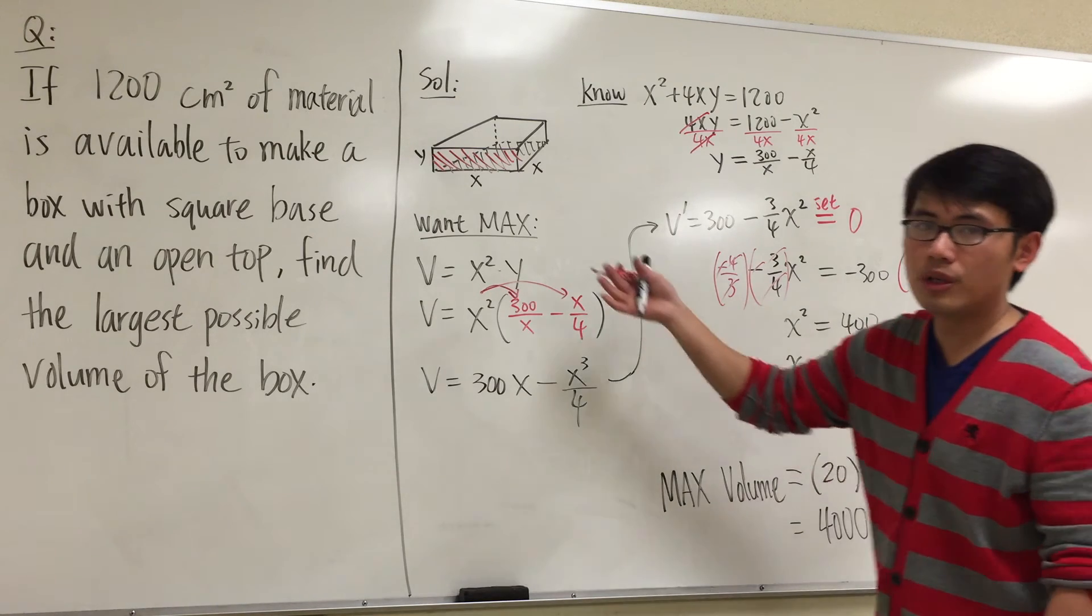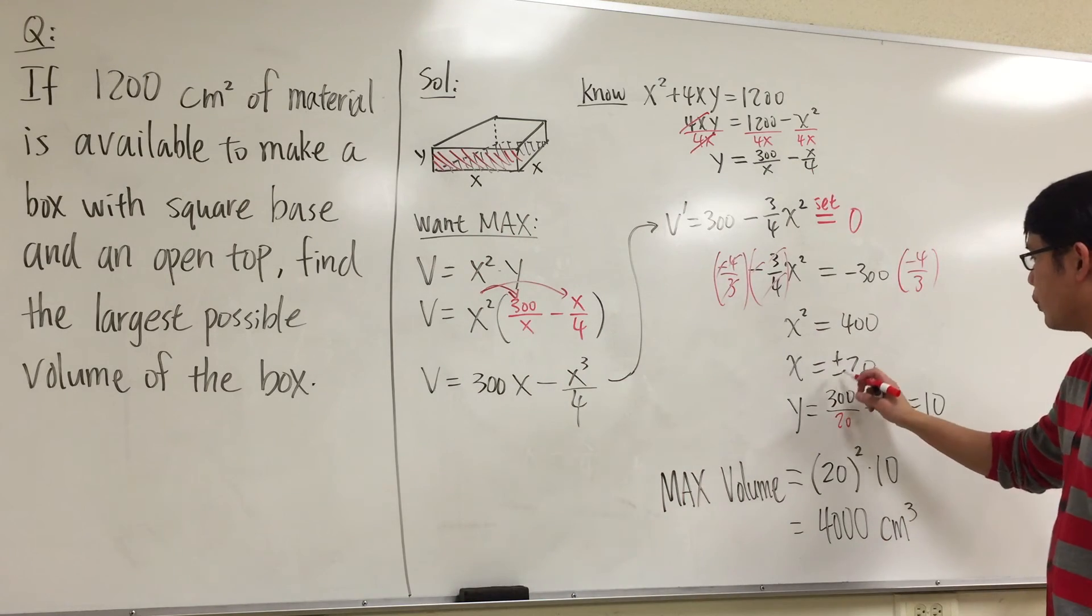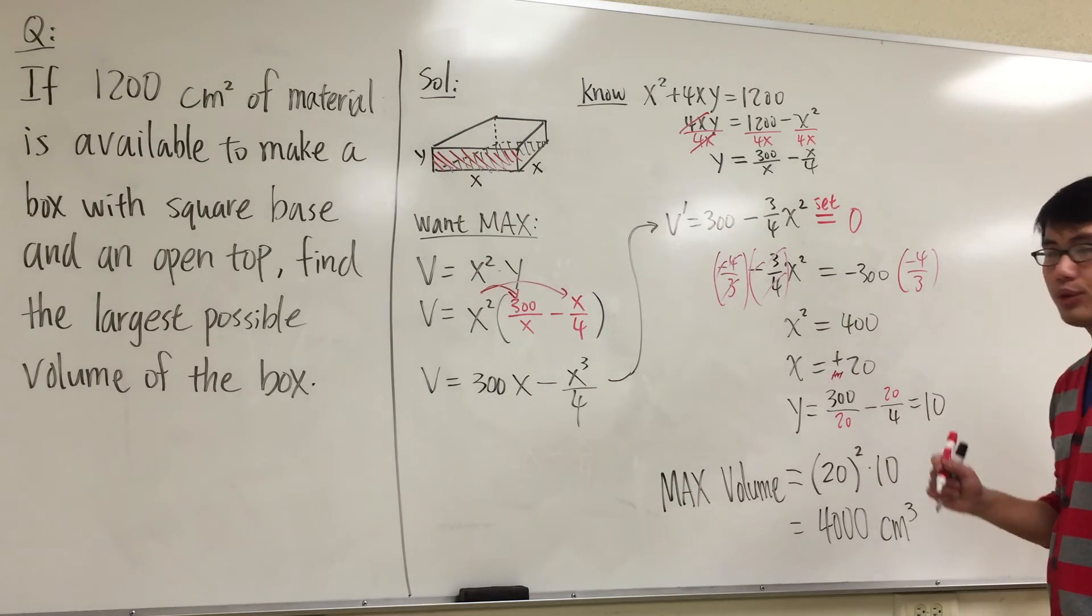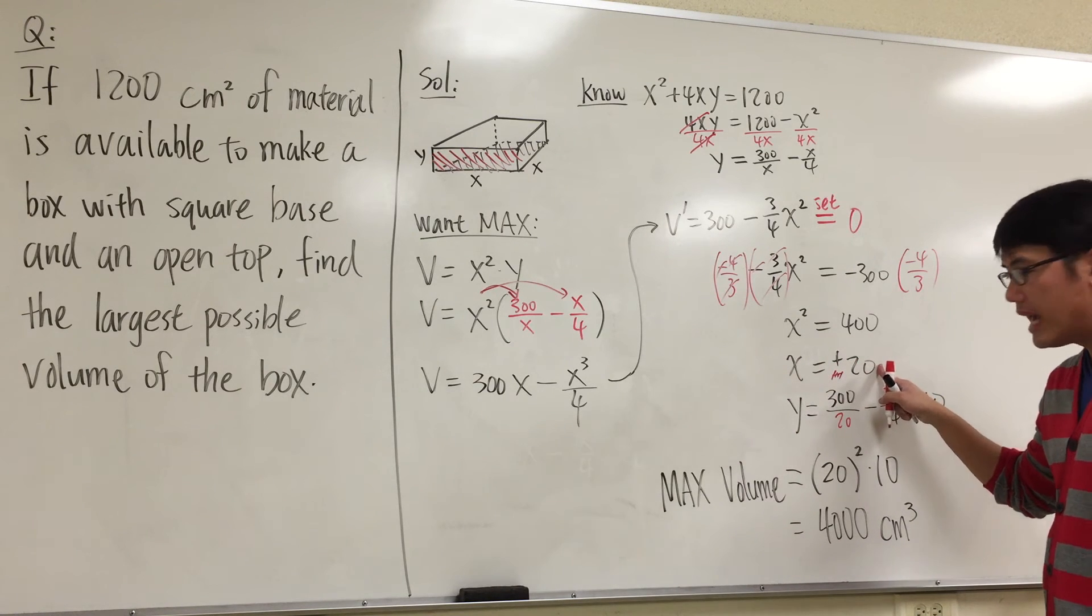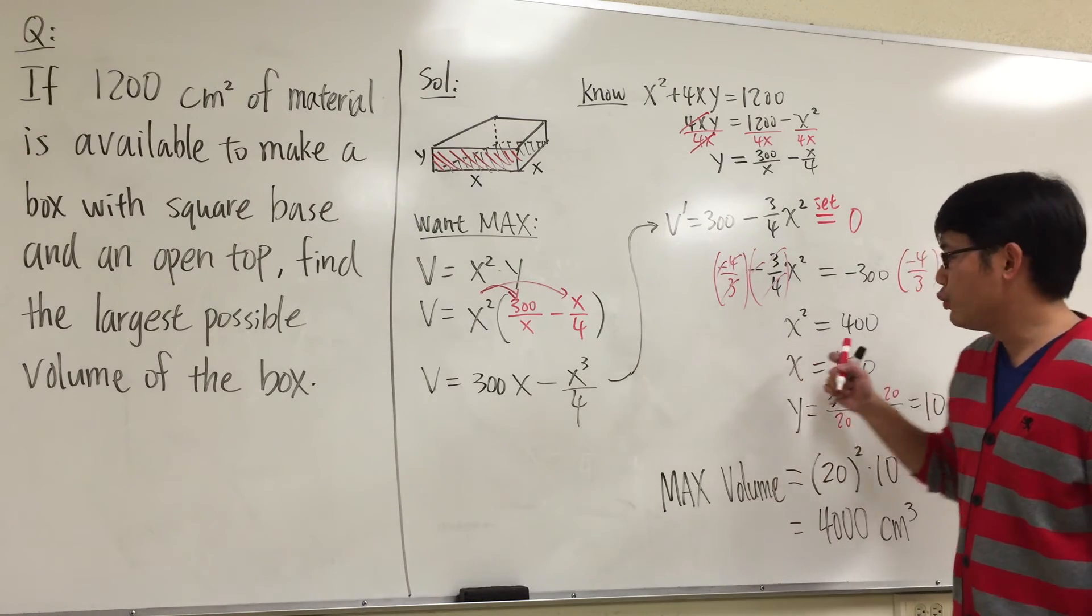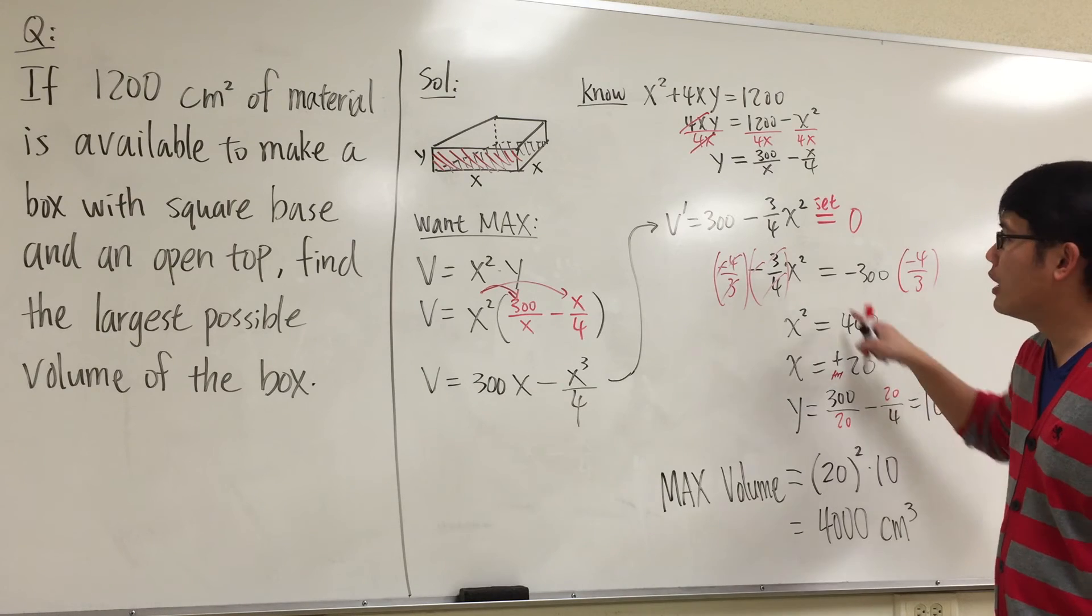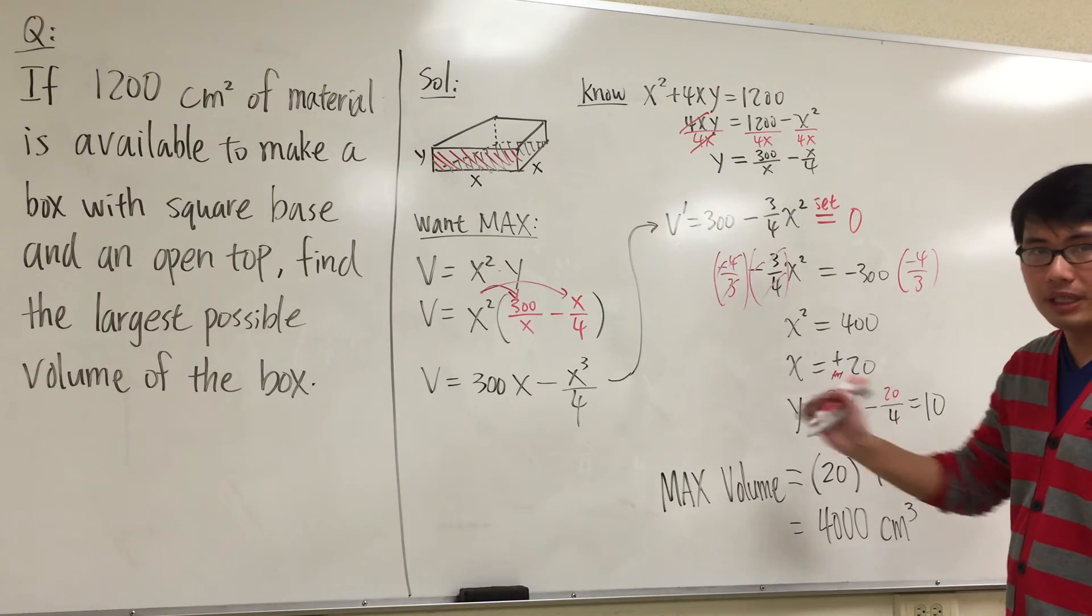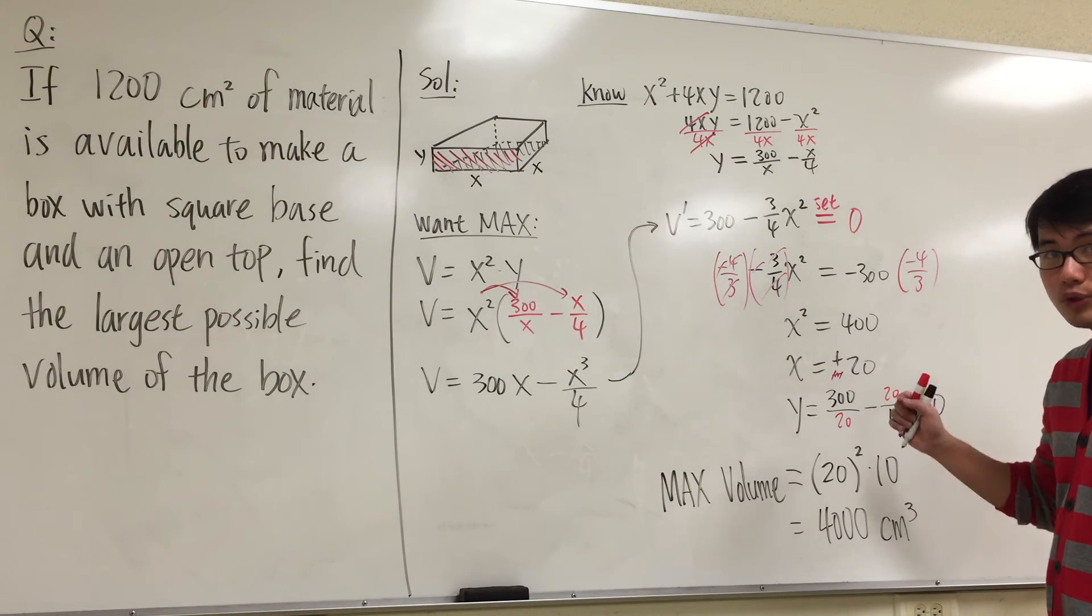But in a geometry situation, we cannot use negative numbers. So technically, we just want positive 20. We just want x to be positive 20. And if you do the first derivative test to check, you indeed get a maximum when x = 20 with the first derivative. We know x = 20 will be the value that we want to use. We also have to find the y.